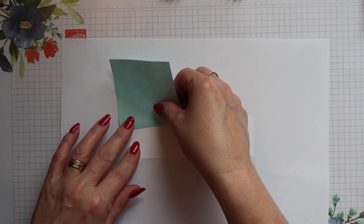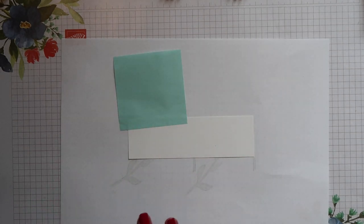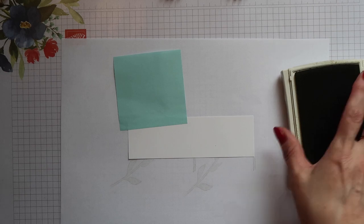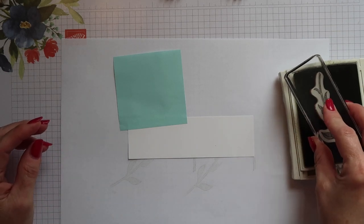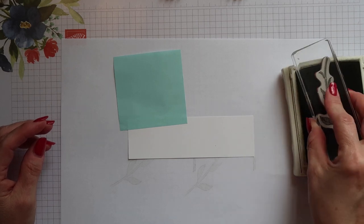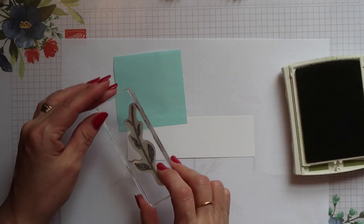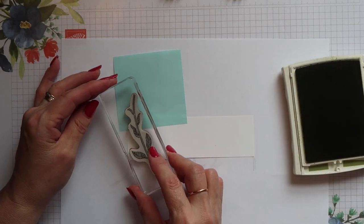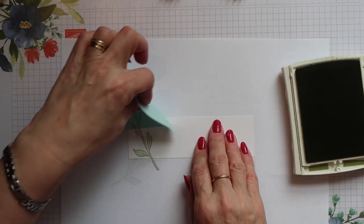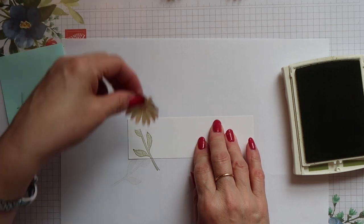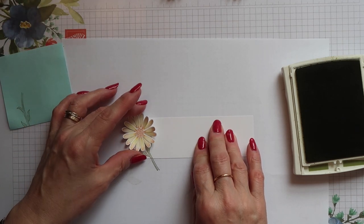This front panel needs to be stamped with four stems, one for each of the daisies that we've just created. Two of the daisies are going to be higher up on the panel than the other two and I want to use the bottom part of the stem for these. So I'm using a post-it note just to mask off the top half so it won't be seen behind the daisies head.